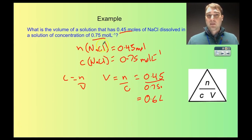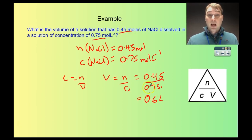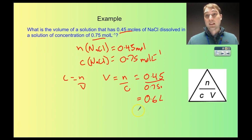What that means is if I wanted to make this solution up, I'd weigh out my 0.45 moles of sodium chloride — and I could figure out the mass of that using another equation — and knowing the concentration I'm trying to make, I'd pop the sodium chloride into a flask and add 0.6 litres of water. That way I would have the concentration I'm looking for.